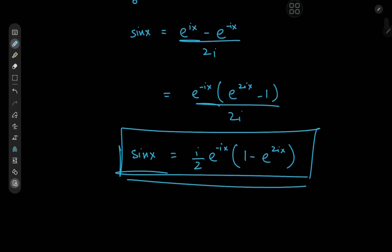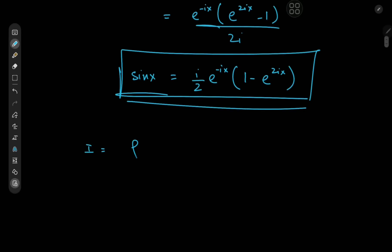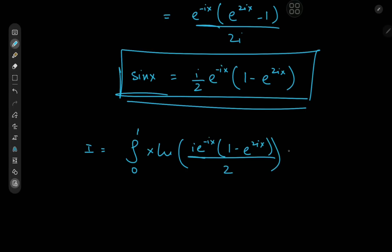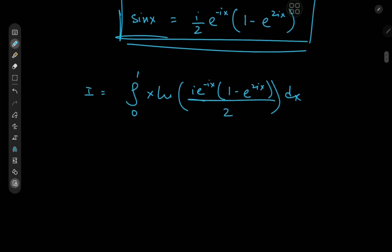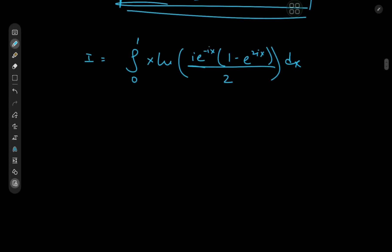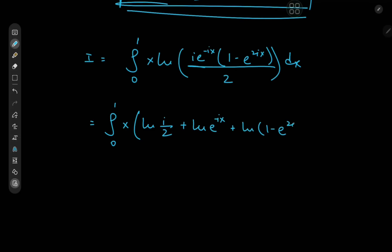To make use of this definition, we have the target integral I equal to the integral from 0 to 1 of x times the logarithm of (i · e^(−ix) · (1 − e^(2ix)) / 2) dx. Using the properties of the logarithm, we can express this single log as a sum of logarithms: x times [log(i/2) + log(e^(−ix)) + log(1 − e^(2ix))].